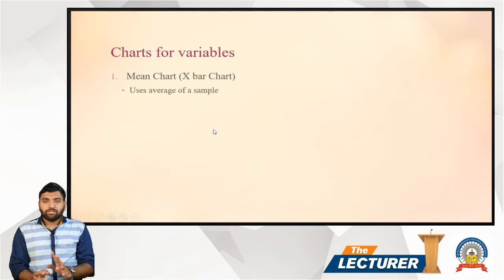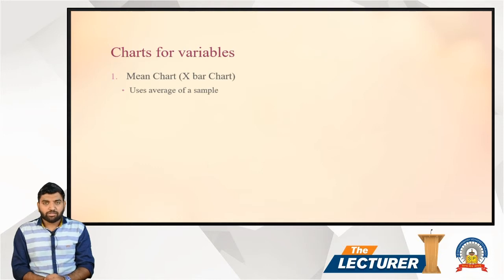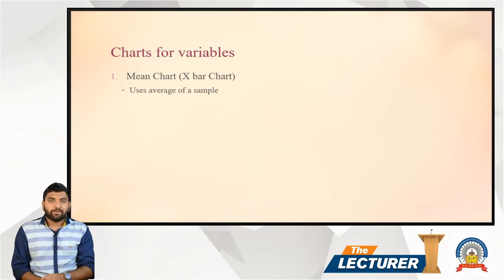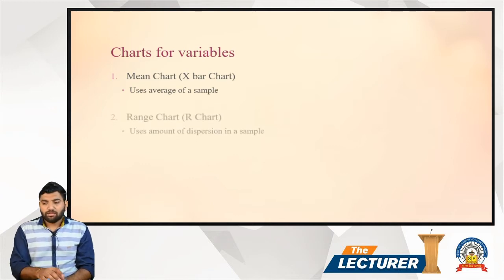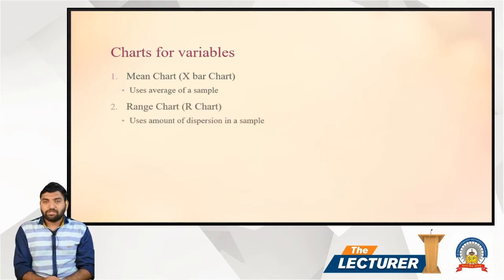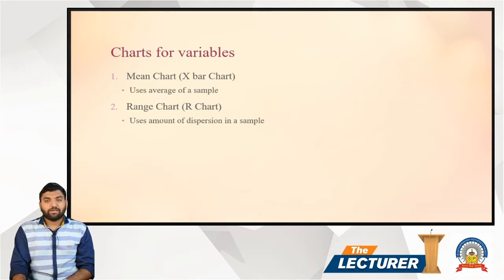Starting with charts for variables, there are two types. First is the X-bar chart, also called the mean chart, and it is used for the average of a sample. If you want to get the average of your sample, this chart is used most of the time. Next is the range chart, or R chart, which is used for the amount of dispersion in samples.